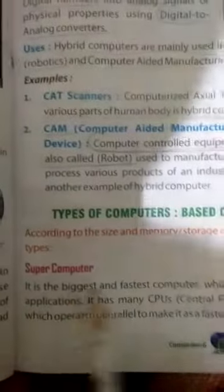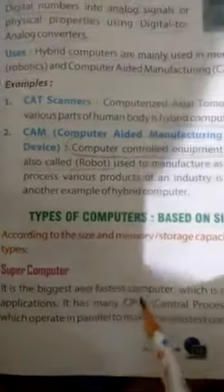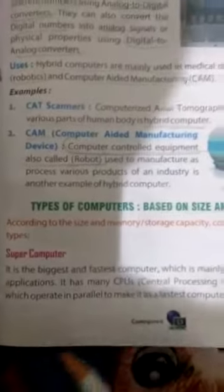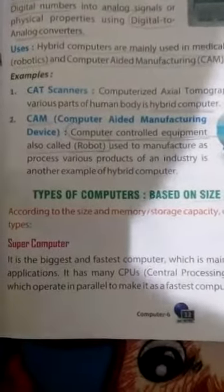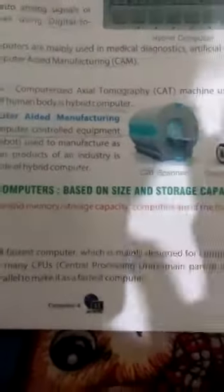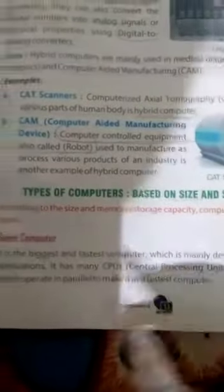So the first type of computer is the biggest and fastest computer, which is mainly designed for complex scientific applications. It has many processors which operate in parallel, making it the fastest computer. Clear?